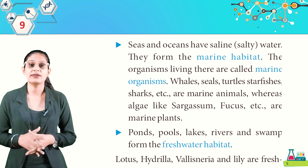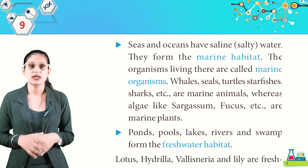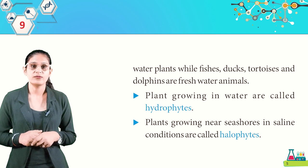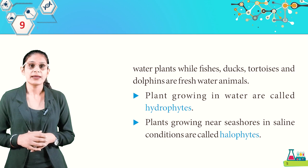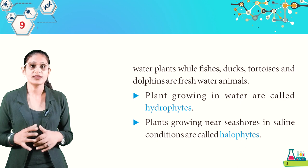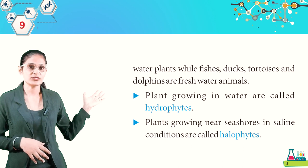Ponds, pools, lakes, rivers, and streams form the freshwater habitat. Lotus, hydrilla, vallisneria, and lily are freshwater plants, while wild fishes, ducks, tortoise, and dolphins are freshwater animals. Plants growing in water are called hydrophytes, and plants growing near sea in saline conditions are called halophytes. You can complete the activity on page 87 by yourself.